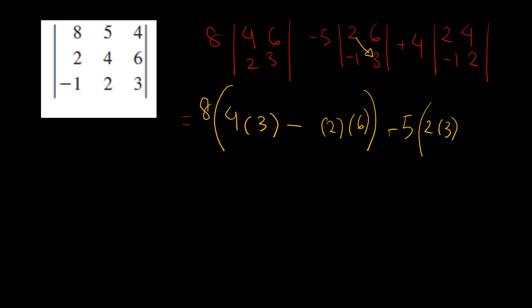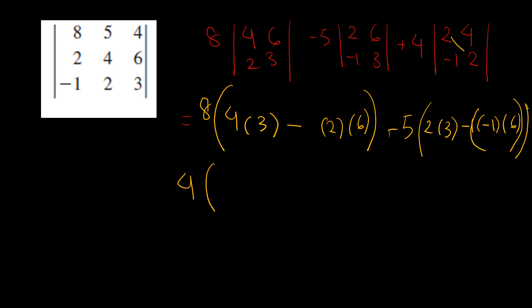So negative 5 times 3, and a negative when we go in the opposite direction. So negative times negative 1, times 6. And now moving on to the last one: we have 4 times 2 times 2. 2 times 2 minus negative 1 times 4. Now, solving all this gives...